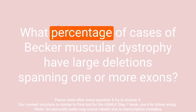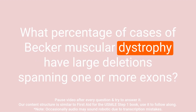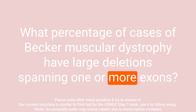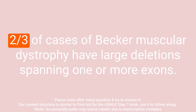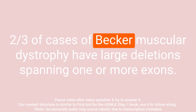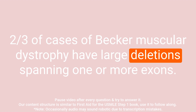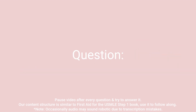Question: What percentage of cases of Becker muscular dystrophy have large deletions spanning one or more exons? Answer: Two-thirds of cases of Becker muscular dystrophy have large deletions spanning one or more exons.